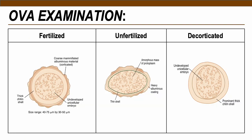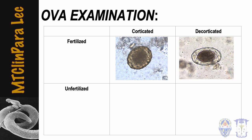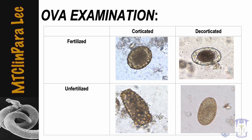To summarize: fertilized eggs contain three layers — outer coarsely mammillated albuminous layer, middle thick chitin/glycogen layer, and inner vitelline membrane protecting the unicellular embryo. Unfertilized eggs are oblong in shape and lack the middle chitin layer. Decorticated eggs are still fertilized but lack the outer albuminous layer, giving a transparent shell. Unfertilized decorticated eggs may appear oblong or rounded with no middle membrane.